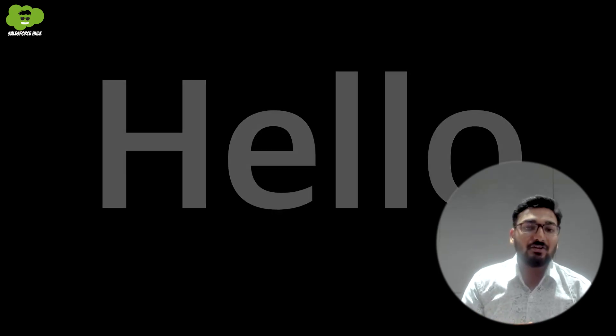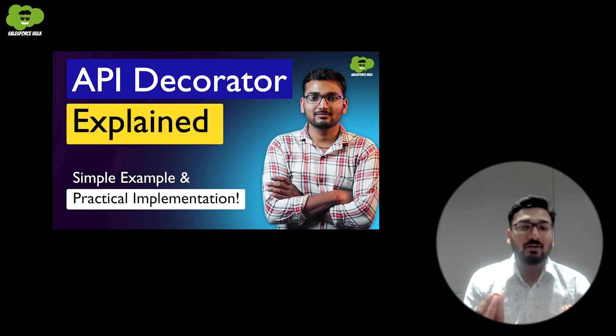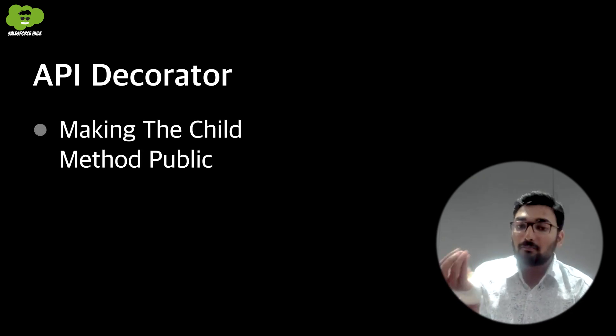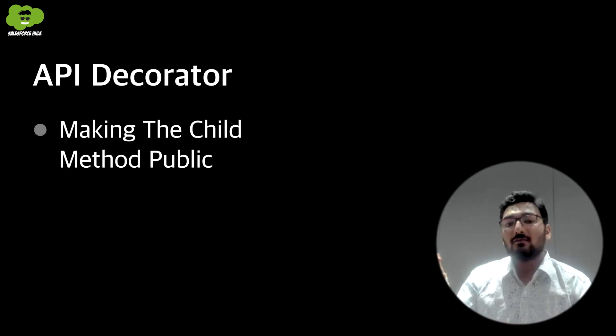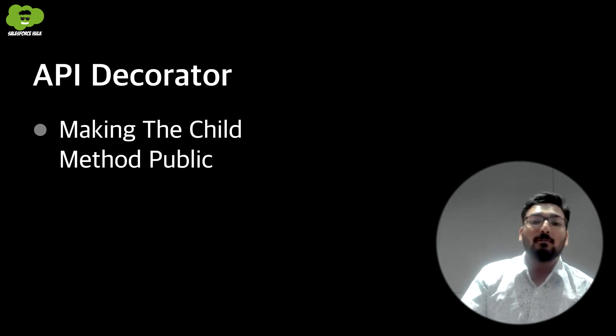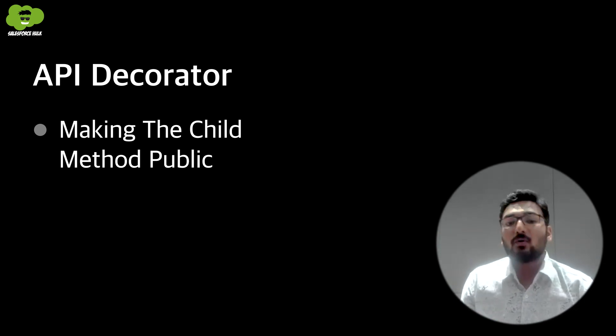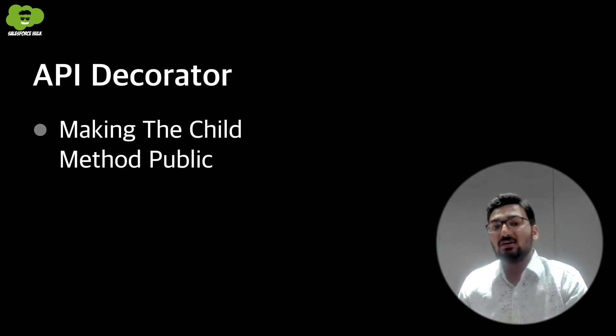Hello, this is the continuation of the last video which we had done about API decorator. In this video we are going to cover one more functionality of API decorator, which is making the child method public so that from the parent component we can call that child component method. That is what we are going to see in this video.